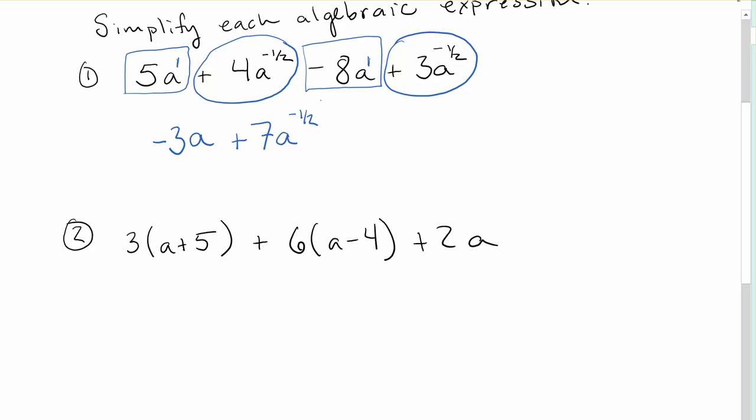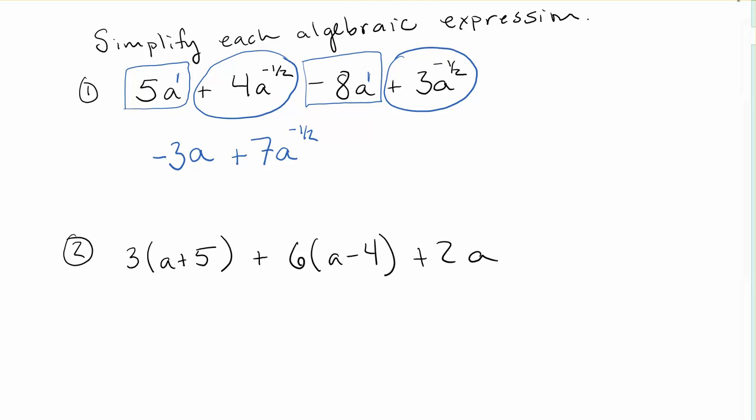And for a problem like this, again if they're asking us to simplify the algebraic expression, really we're looking to see is there anything we can do to make this prettier. So I notice I've got some brackets and if I look carefully I see I've got lots of a's. They all have the same power of 1 so they're probably all going to be like terms and I'm going to have a bunch of numbers. Maybe I can make this prettier by expanding out the brackets.